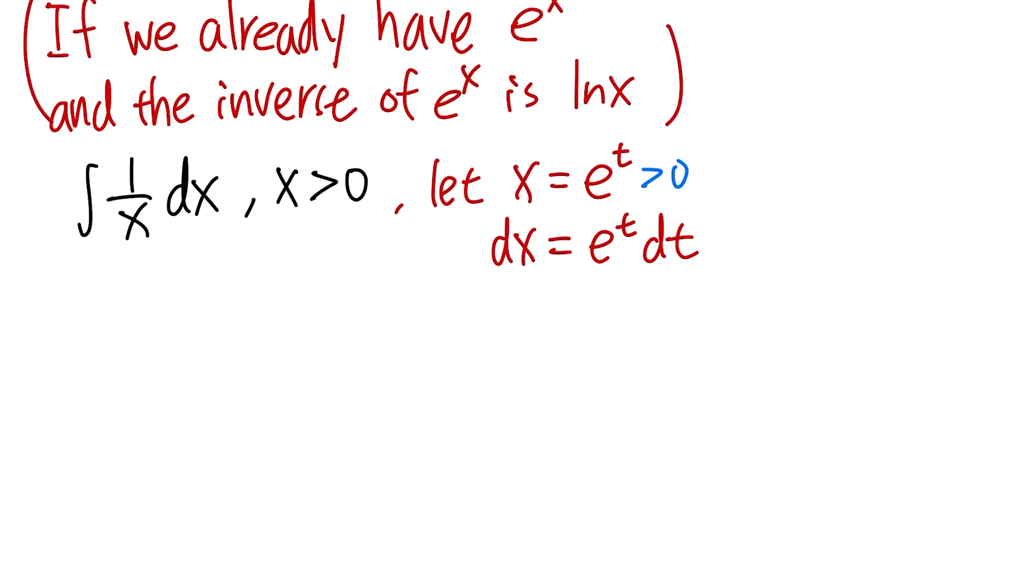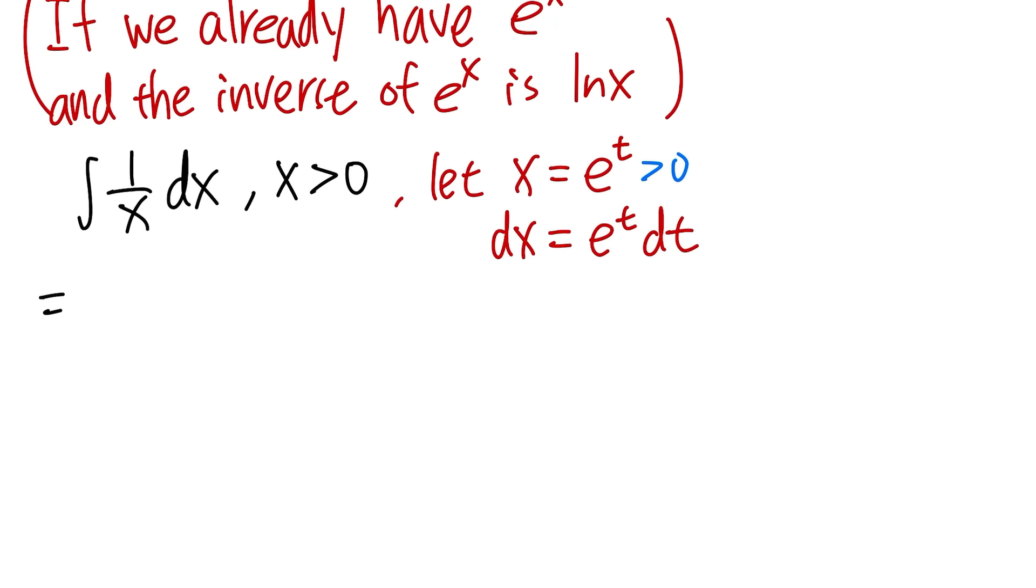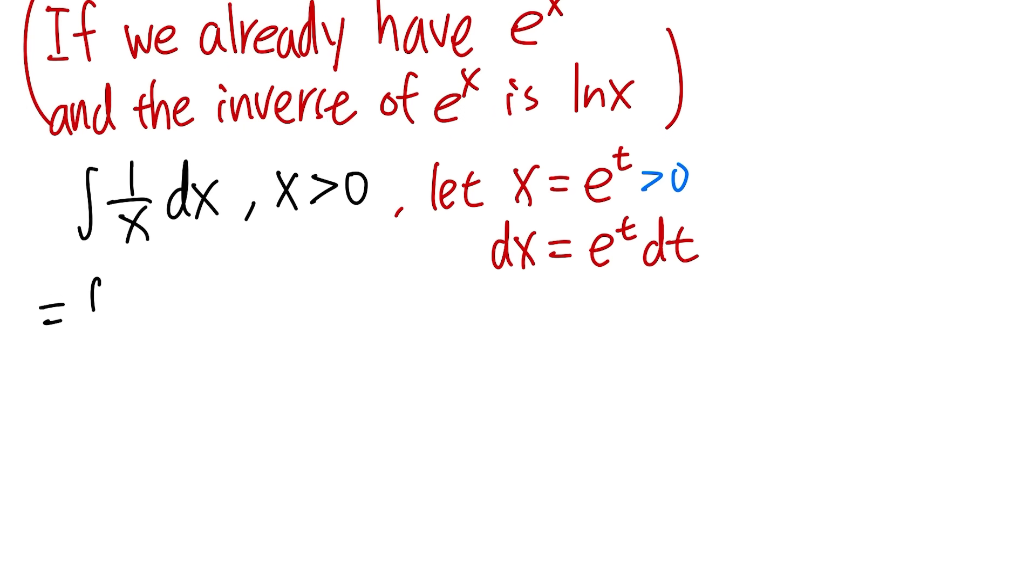And now we can just take this integral to the world. Have a look. Here we have the integral 1 over x. The x is e to the t, so I will just put that for the x. And then dx is e to the t dt. And this is so wonderful because e to the t, e to the t cancel. And we are just looking at the integral of 1 in the t world.